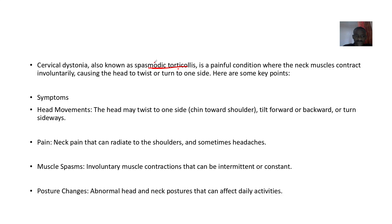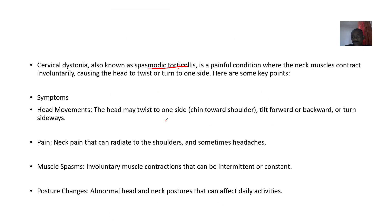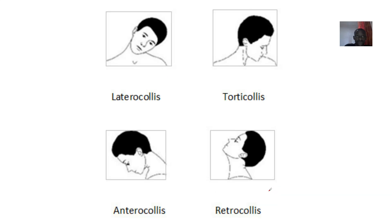What are the symptoms of cervical dystonia? First, head movement — the head may twist to one side, so your chin can twist towards the shoulder, forward, or backward. Second, pain — neck pain can radiate into the shoulders and sometimes cause headaches. Third, muscle spasm — involuntary muscle contraction can be intermittent or constant. Fourth, posture changes — abnormal head and neck postures can affect your daily activities.